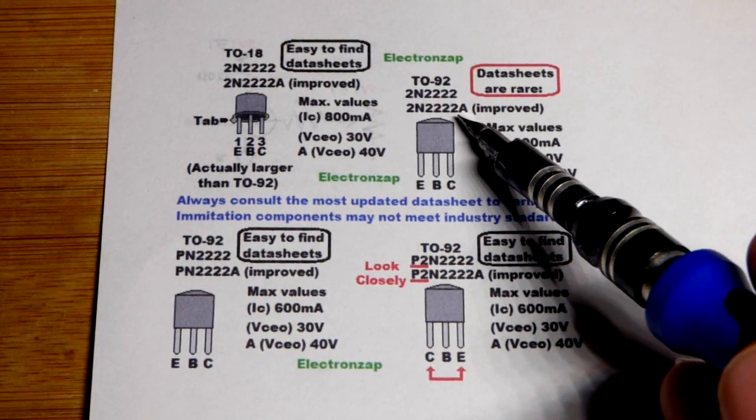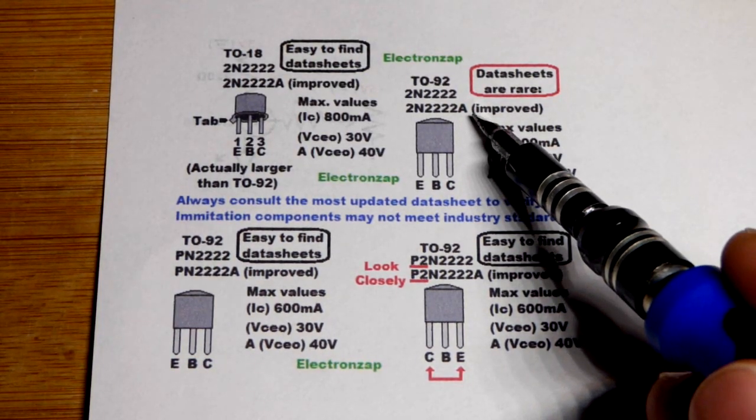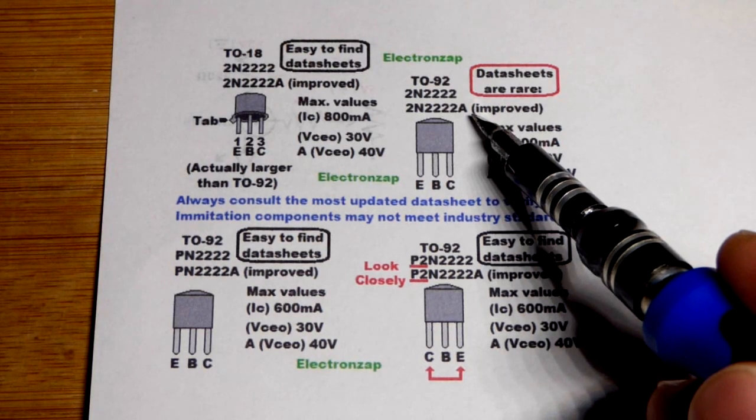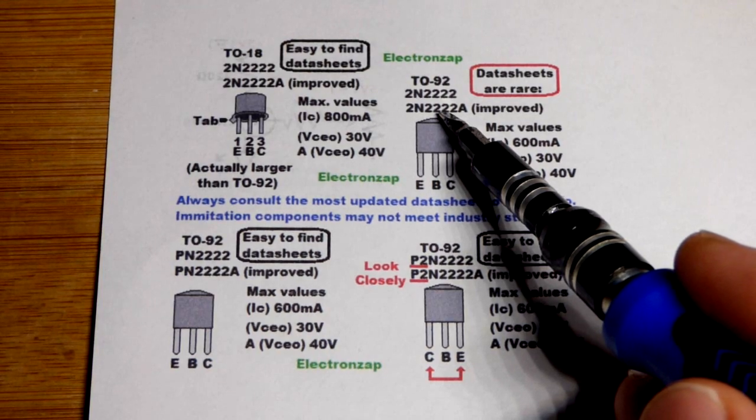The 2N2222A is just an improved version right there. And so it can either handle some more current or something, something like that. Whatever that one can do, that one can do at least as well, maybe better.